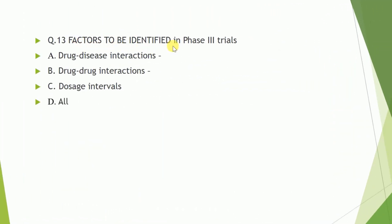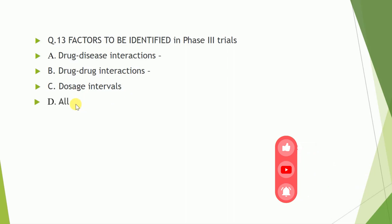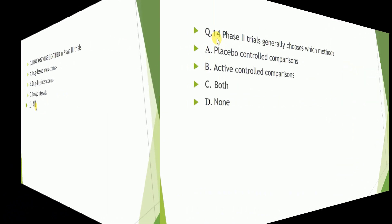Question number thirteen: factors to be identified in phase three trial. Options include A) drug-disease interaction, B) drug interaction, C) dose intervention, D) all of these. The correct answer is all of these.